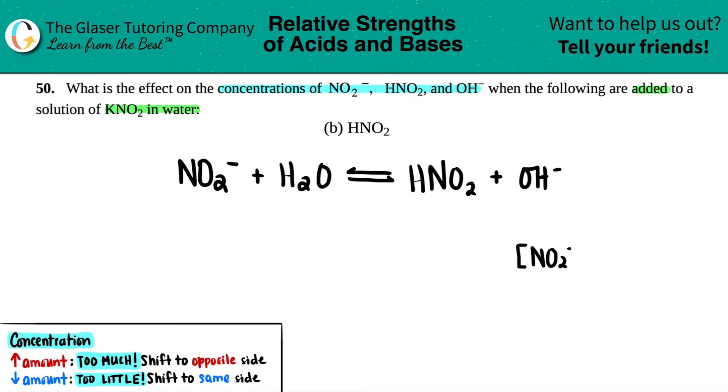So we have NO2 minus. We want to figure out what's going on with that. We want to figure out what's going on with HNO2, and then we want to find out what's going on with the concentration of OH minus. Now, they're clearly saying that we're increasing HNO2. That's right here. So we already found out what one thing is going to be going on. We're increasing HNO2. So for the HNO2 concentration, I know that this is going to go up because literally they said we're adding HNO2. So that has to go up.